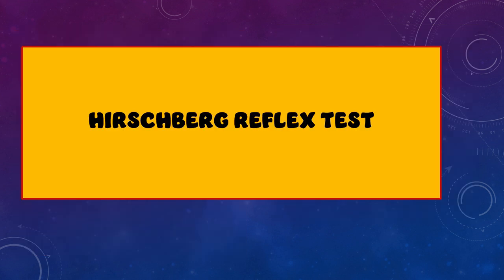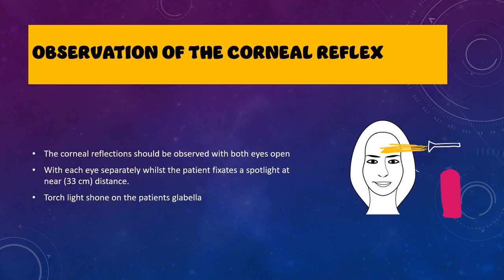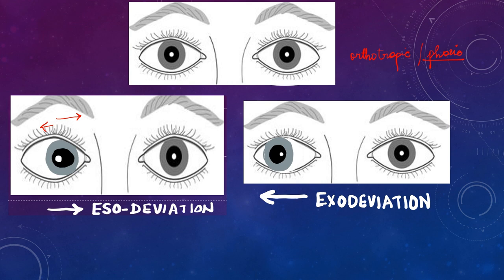Now let us come to the proper topic — Hirschberg's corneal reflex test. In this test we use a spotlight or torchlight at a distance of about 33 centimeters from the patient. The torch is shown on the patient's glabella and the corneal reflections are observed with both eyes open. If the reflexes fall right at the center of the pupil in both eyes, the patient is orthotropic — meaning no manifest squint is present. The patient might have a phoria detectable only by cover test, but on Hirschberg's the patient appears orthotropic.